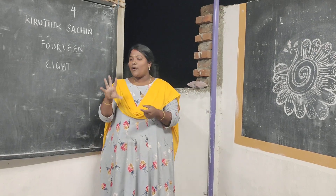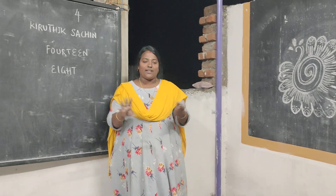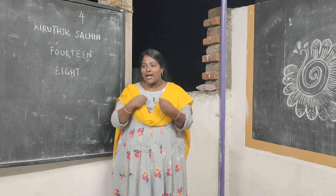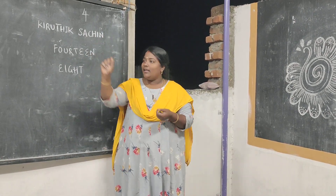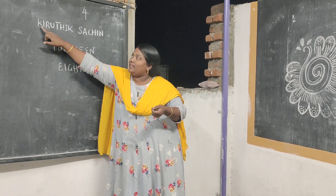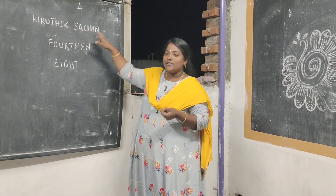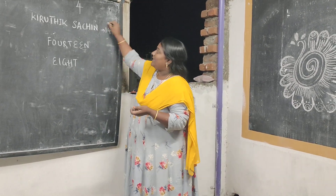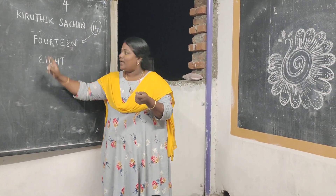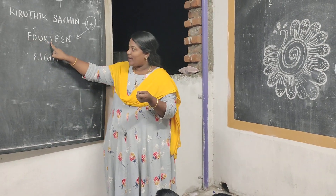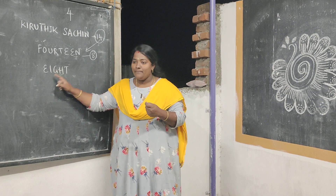So for the number 4, here is what I can do. You have to take any name — I'll take my son's name. First, you have to write your name in spelling, then count the letters: 1, 2, 3, 4, 5, 6, 7, 8, 9, 10, 11, 12, 13, 14. So I have 14 letters. Now you write the number name of 14. Next, write the name of 8: E-I-G-H-T.